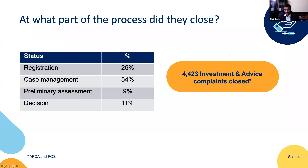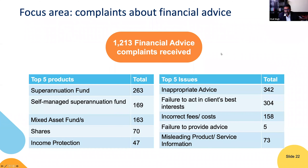Getting into actual financial advice complaints specifically — there are about 1,200, so of 80,000 total, less than 2%. The big ones are failure to act in the client's best interests, fees — continuing to be a problem in terms of explaining what the fees are and what service arrangement was agreed to — and misleading product or service information. SMSFs account for around 170, super funds 260.